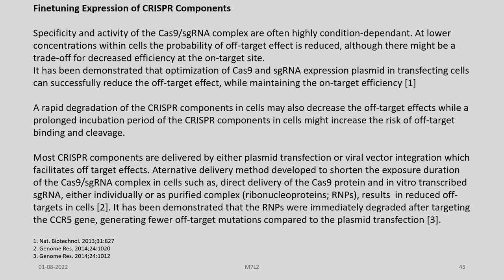Another approach is the fine-tuning of expression of CRISPR components. Specificity and activity of the Cas9–sgRNA complex are often highly condition-dependent. At lower concentrations within cells, the probability of off-target effects is reduced, although there might be a trade-off of decreased efficiency at the on-target site. It has been demonstrated that optimization of Cas9 and single guide RNA expression plasmid in transfecting cells can successfully reduce off-target effects while maintaining on-target efficiency. A rapid degradation of CRISPR components in cells may also decrease off-target effects, while prolonged incubation might increase the risk of off-target binding and cleavage.